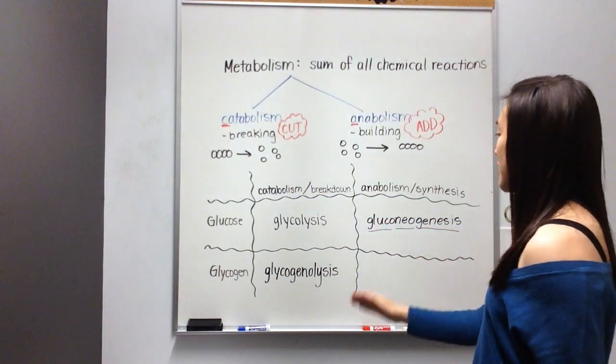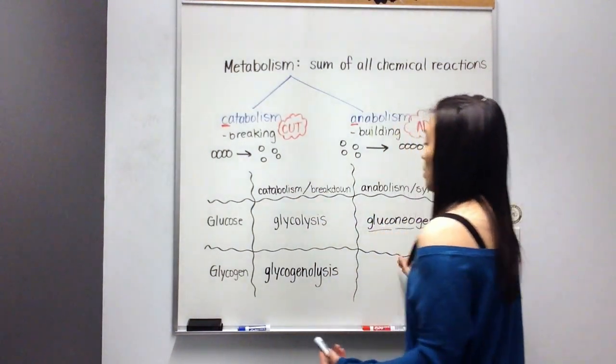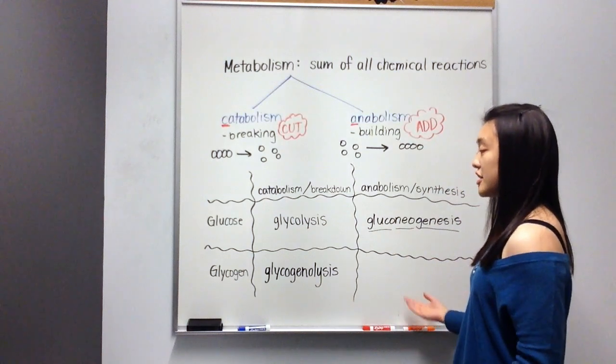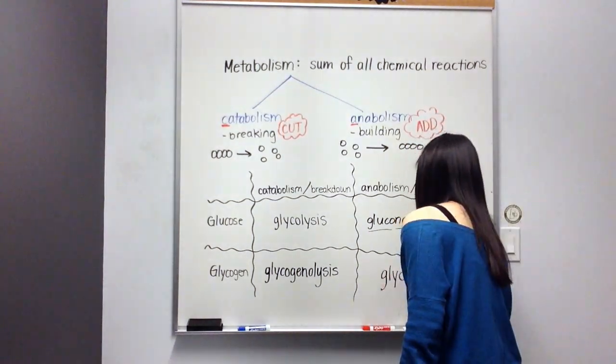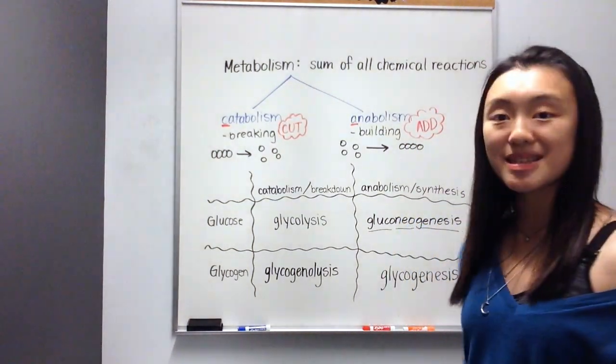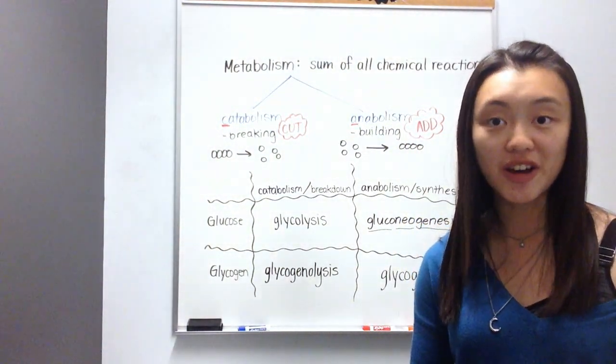Finally, we have glycogen anabolism, or the synthesis, the production of glycogen. And this is known as glycogenesis. And glycogenesis simply means formation of glycogen.